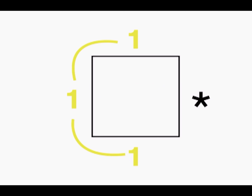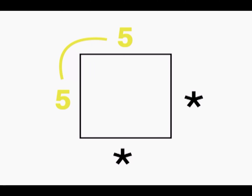We can also have notes that are longer than a single beat. Here you can see how we connect the same note going from beat to beat with a curved line. Let's see some examples. In this example, we play one yellow for the first three beats and a rest on the fourth beat.